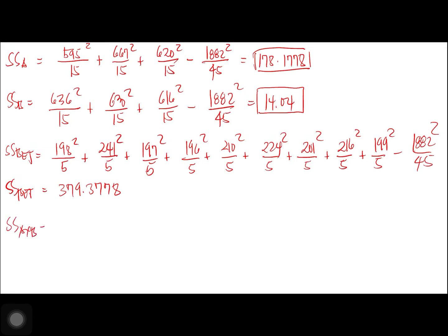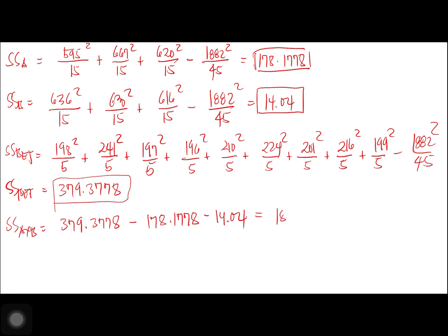For SSAxB, the interaction sum of squares, we compute: SS between minus SSA minus SSB = 379.3778 − 178.1778 − 14.04. This gives SSAxB = 187.16.